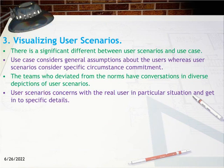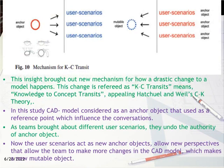Insight 3 — Visualizing user scenarios: There is a significant difference between user scenarios and use cases. Use cases consider general assumptions about users, whereas user scenarios consider specific circumstance commitments. Insight 4: Teams who deviated from the norms had conversations in diverse depictions of user scenarios. User scenarios concern real users in particular situations and get into specific details. Insight 5: This brought out a new mechanism for how a drastic change to a model happens. This change is referred to as K-C transits — knowledge to concept transits — applying Hatchwell and Weil's CK theory.